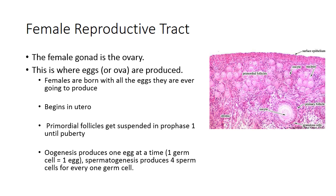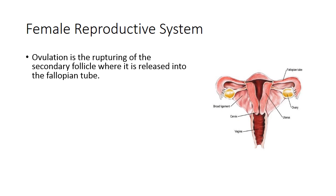Oogenesis, the process of producing an egg, produces only one egg at a time — one germ cell equals one egg. In contrast, spermatogenesis produces four sperm cells for every one germ cell. Producing an egg is very costly and happens one at a time over roughly a 27-day menstrual cycle, whereas males can produce many sperm every couple of hours.